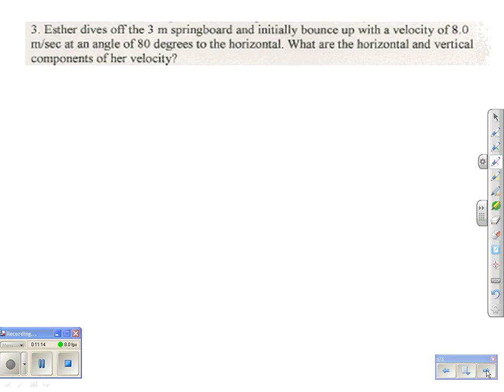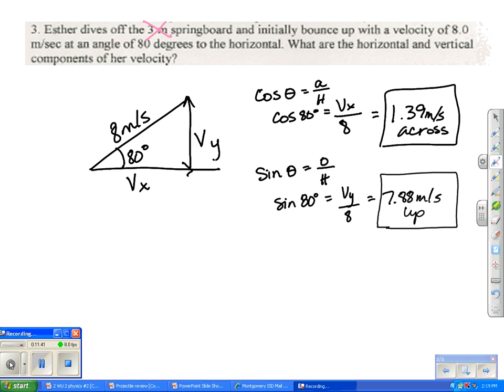Moving on, we have that she's diving off this springboard. She initially bounces up with a velocity of 8 meters per second at an angle of 80 degrees to the horizontal. What's the horizontal and vertical? So this is a vector problem. We're trying to find the vx and the vy. You are going to be able to do that using trig. You'll use sine and cosine. Cosine to find the vx. And you'll take the angle of 80 degrees and plug it in for theta. Cross multiply with the hypotenuse of 8. And find out that your vx is 1.39 meters per second across. For the vy, you'll use sine. Plug in 80 degrees and 8 for your hypotenuse. Cross multiply. And your vy will be 7.88 meters per second up.